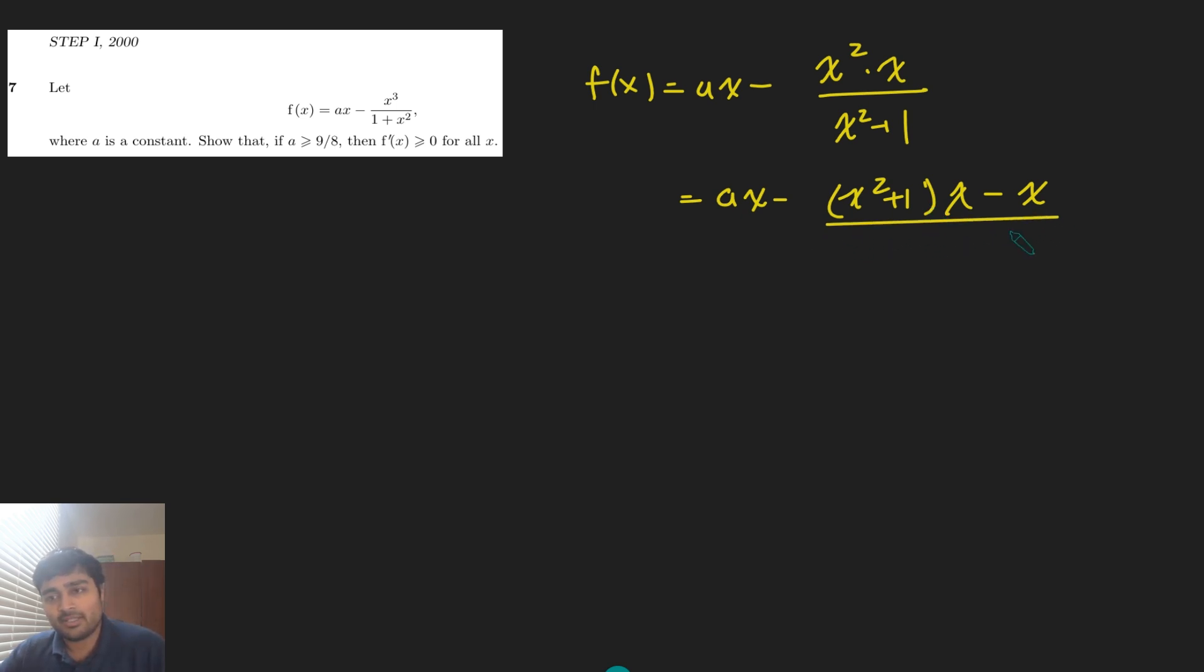And then I'm going to divide this by x squared plus 1. So this just becomes ax minus x, and then plus x over x squared plus 1. And that's a little bit more manageable. Okay, great.